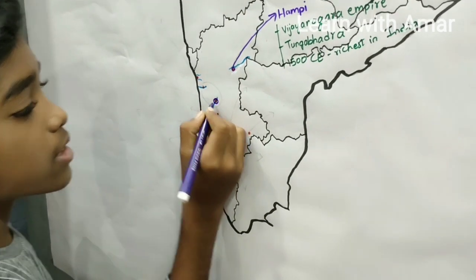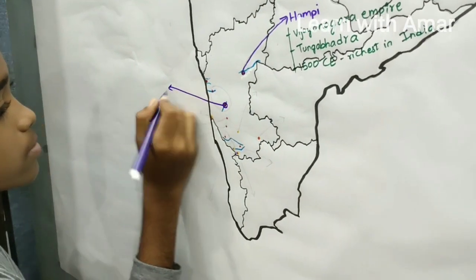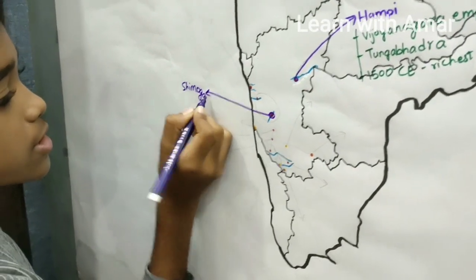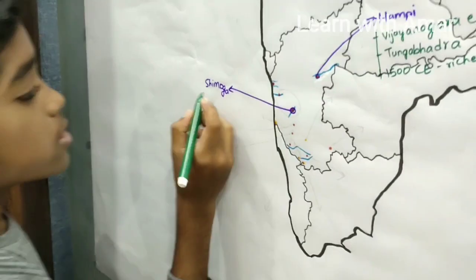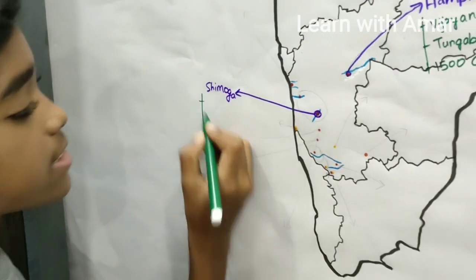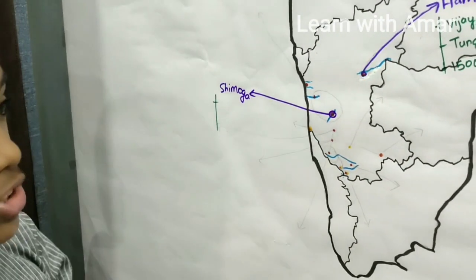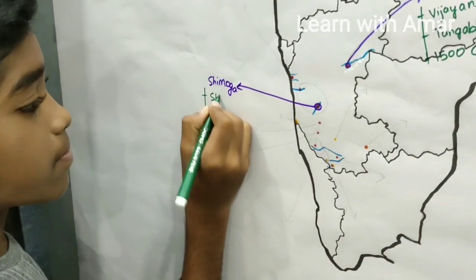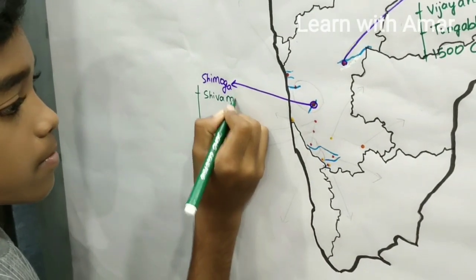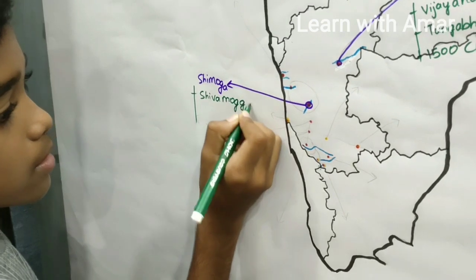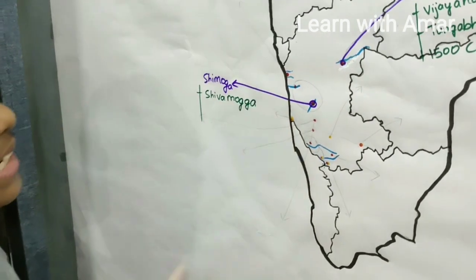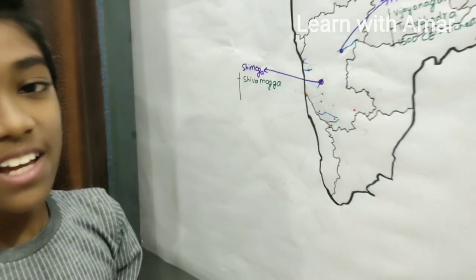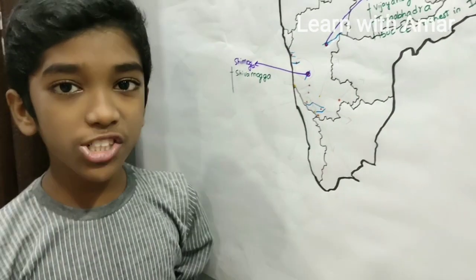Next we find Shimoga. Shimoga has been renamed as Shivamoga, and Shivamoga means the face of Lord Shiva.